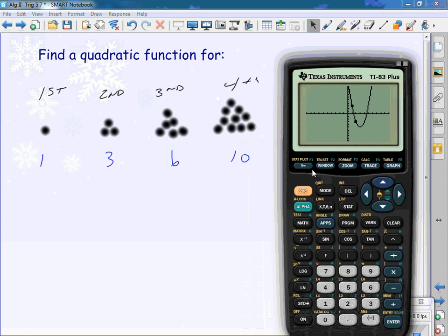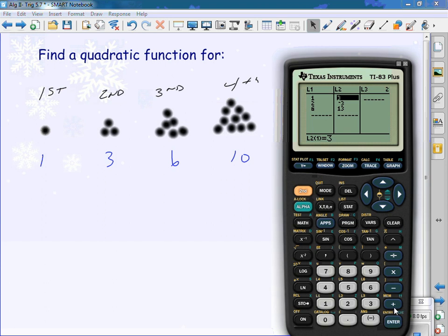I want you to put this in the calculator to find out what it's going to be. What do I hit first? Stat. Enter. Alright. Which one are going to go into my L1? Which ones are going to go into my L2? They all do not go into L1. One, two, three, four goes into my L1. So one, two, three, four goes into my L1. One, three, six, ten.